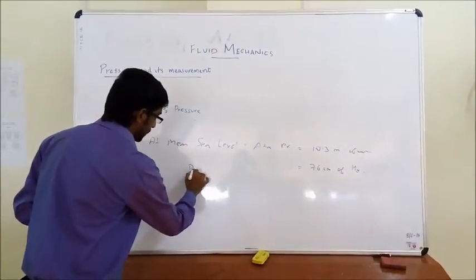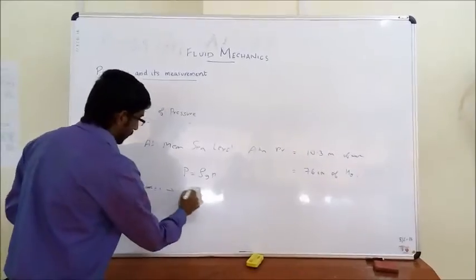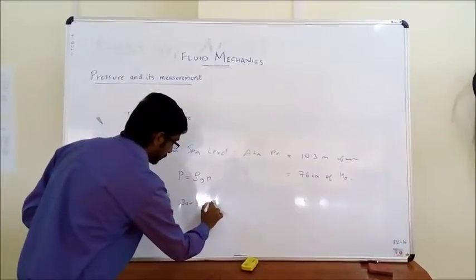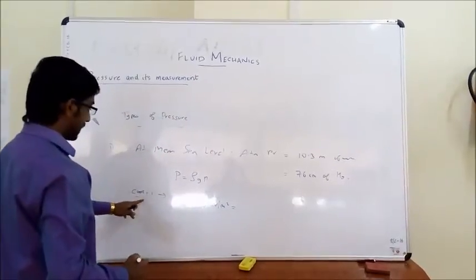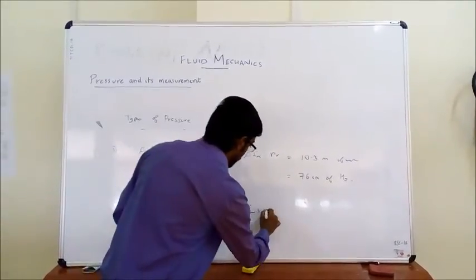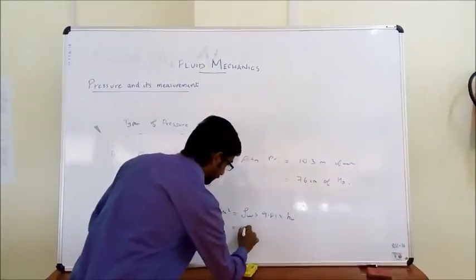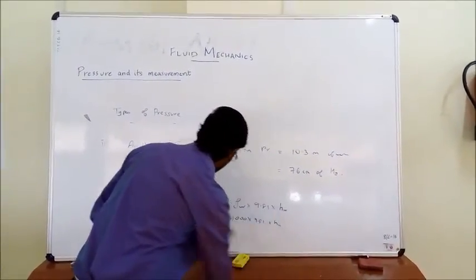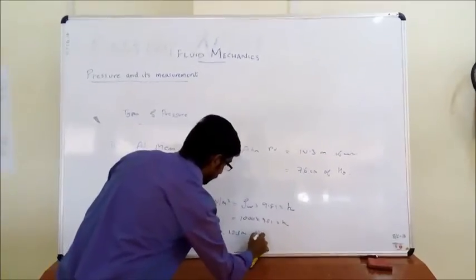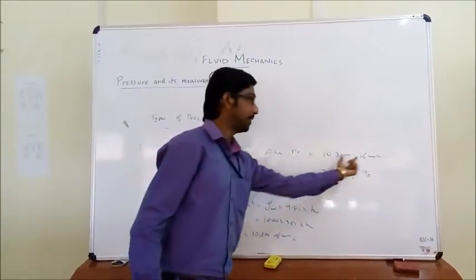We know pressure P = ρgx. In case 1, representing in terms of water: atmospheric pressure is 1 bar, equal to 10 raised to 5 Newton per meter square. We can write ρ_w × g × h_w = 1000 × 9.81 × h_w. Solving this, we get h_w = 10.3 meters of water. That is why 1 bar, or 1 atmospheric pressure, equals 10.3 meters of water.